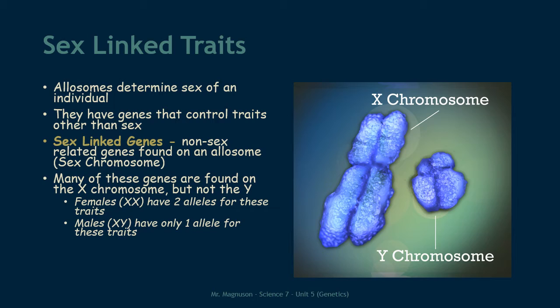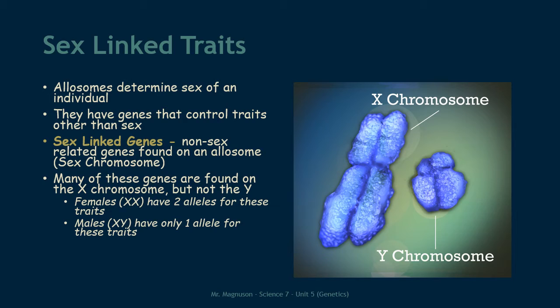Let that sink in. Everything we have done with Punnett squares so far has involved each box having two alleles. But now we have females that still have two alleles, and males that only have one allele for a trait because they only have one X chromosome. This is why we find unusual things happening with sex-linked traits — sex-linked traits are just the traits controlled by these sex-linked genes.